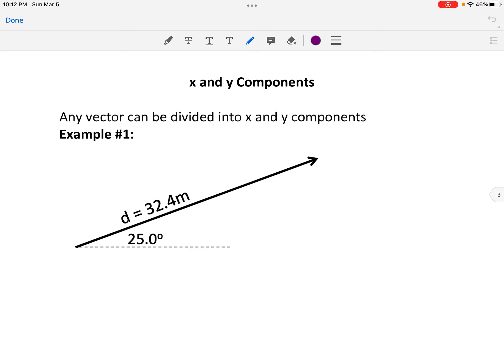So here's the idea. You have a vector at some funny angle. So here's a displacement vector, 32.4 meters, off at 25 degrees. How do I actually write that in x and y components?